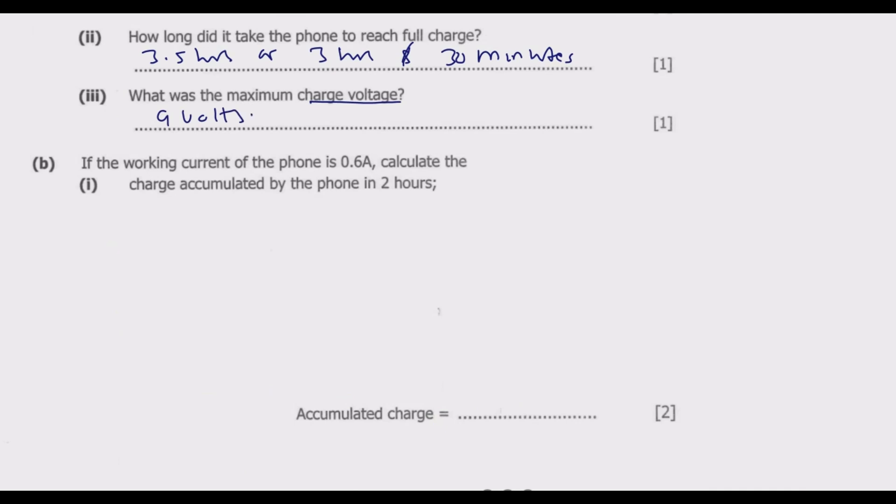Part B: If the working current of the phone is 0.6 amps, calculate the charge accumulated by the phone in 2 hours. This is given by current times time equals charge in coulombs. To find the charge you multiply the current with time. Q equals current in amps multiplied by time in seconds. The current is 0.6 amps, then multiply by time. But the time is in hours and it's supposed to be in seconds.